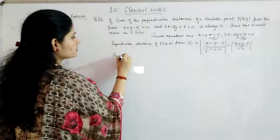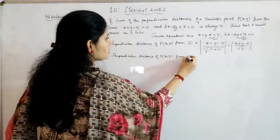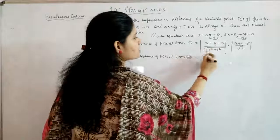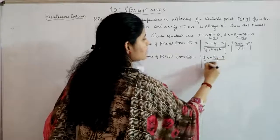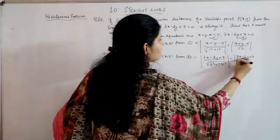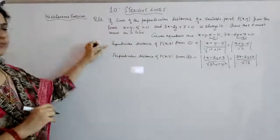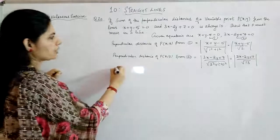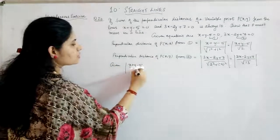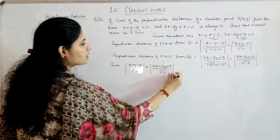Now we find the perpendicular distance of P(x, y) from the second equation. The point (x₁, y₁) is the same (x, y), giving |3x - 2y + 7| / √(3² + (-2)²) = |3x - 2y + 7| / √(9 + 4) = |3x - 2y + 7| / √13. Their sum equals 10, so: |x + y - 5| / √2 + |3x - 2y + 7| / √13 = 10.